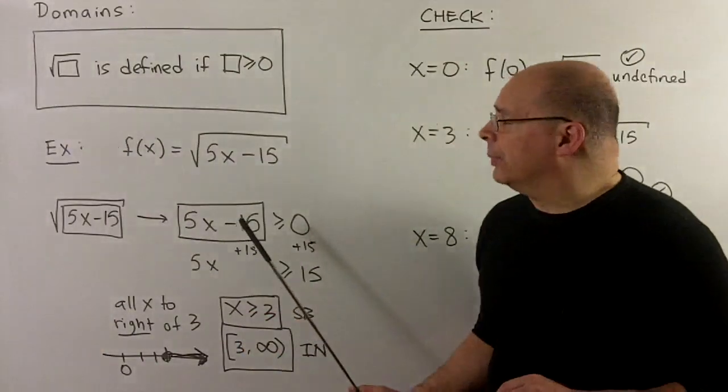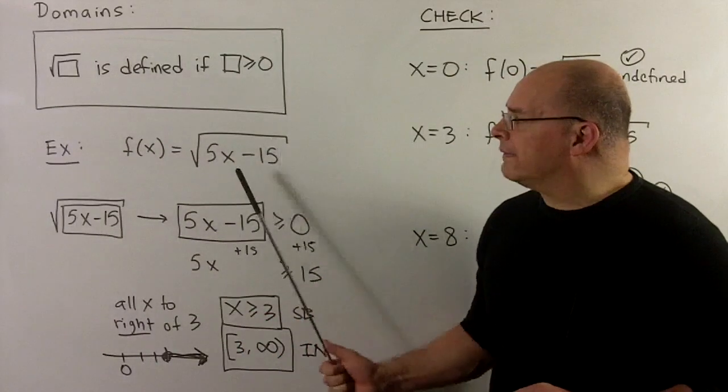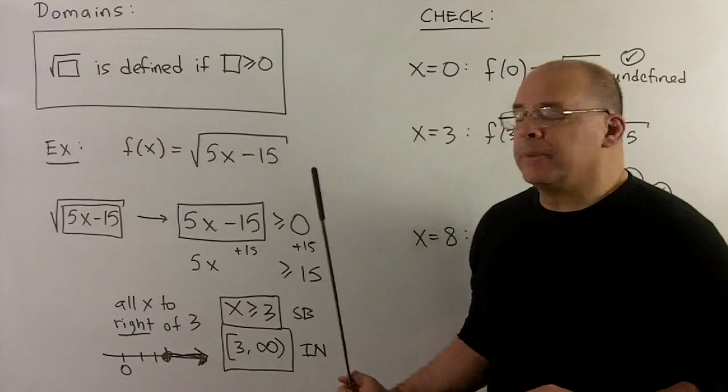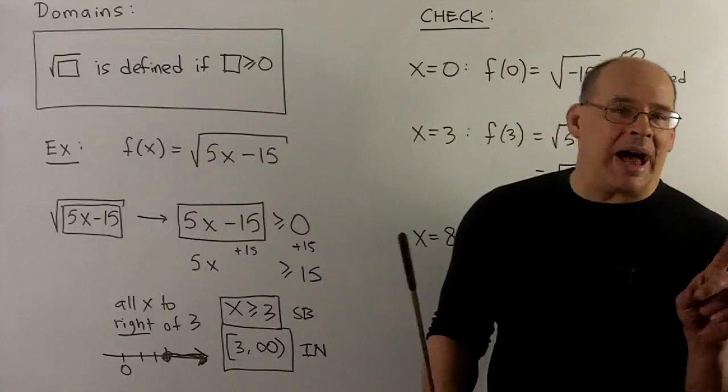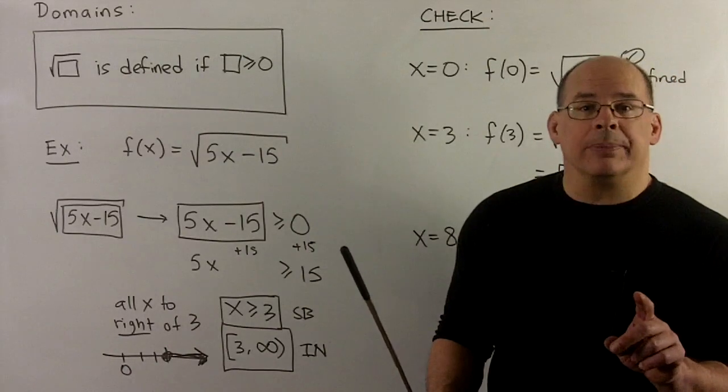we take f of x equal to, and we've got square root of 5x minus 15. I'm able to access what's inside the square root by the following language trick.